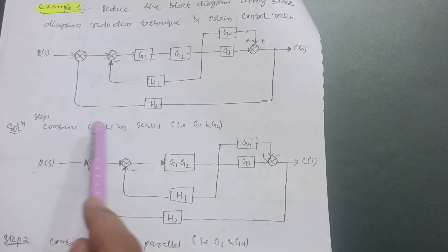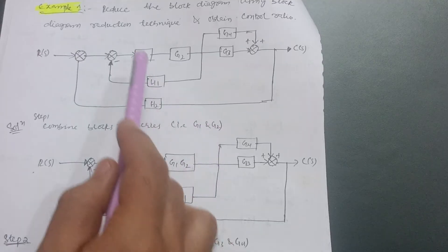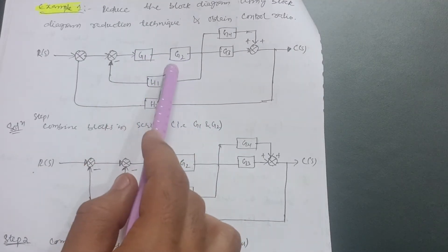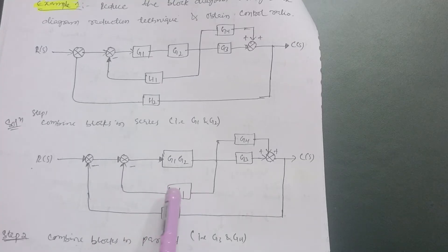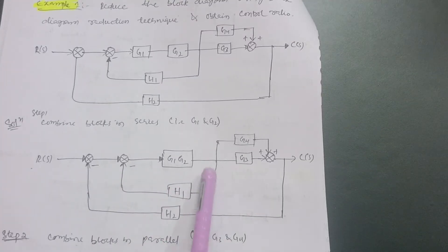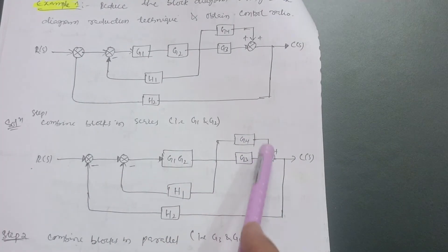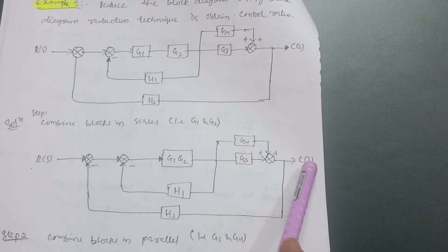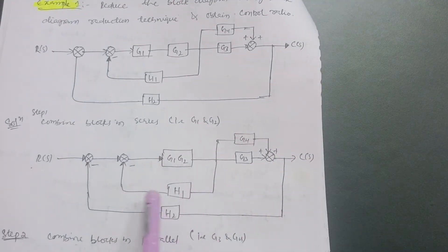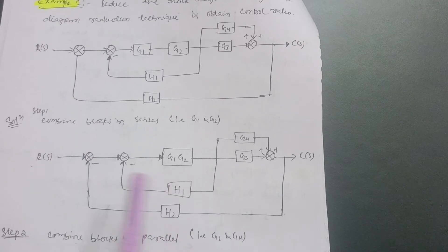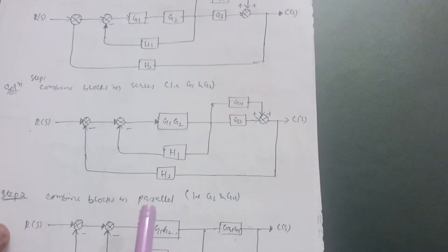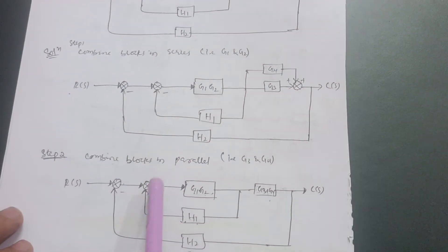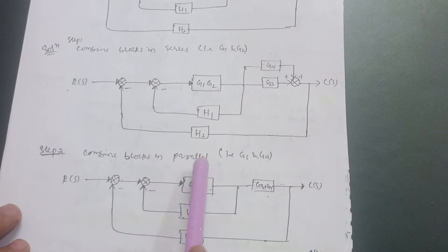So step-wise, combine blocks in series — that is G1 and G2. The rest of the diagram is the same: H1 is feedback, and it goes to G4, G3, and summing point C(s) output function. H1 and H2 are the feedback paths. I have just made one move here — combining these two blocks in series. This is the first step.